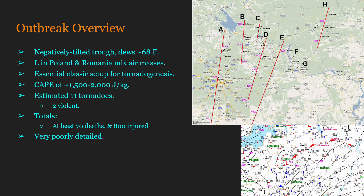And that definitely occurred, with an estimated 11 tornadoes, two of those being violent. That is a relatively high percentage of violent tornadoes per overall count. There were at least 70 reported deaths and 800 injuries. The fact that this event happened around Moscow is also quite notable. Our storm tracks are shown here as red lines, with pink numbers indicating the times of radar imagery available in the paper. The low pressure setup is also visible at the bottom right.